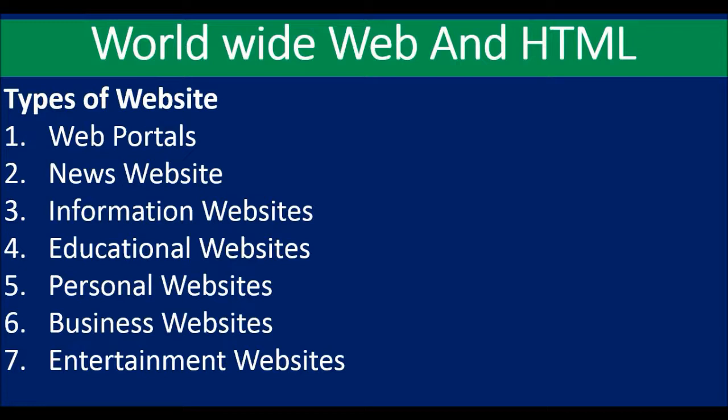Today's topic is different types of websites. There are 7 types of websites: News websites, Informational websites, Educational websites, Personal websites, Business websites, and Entertainment websites.